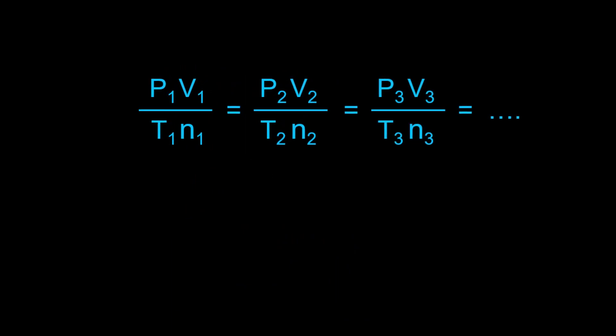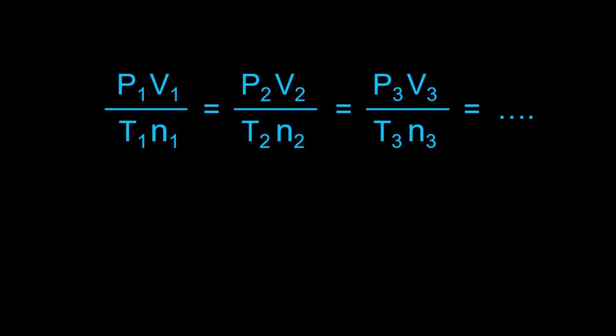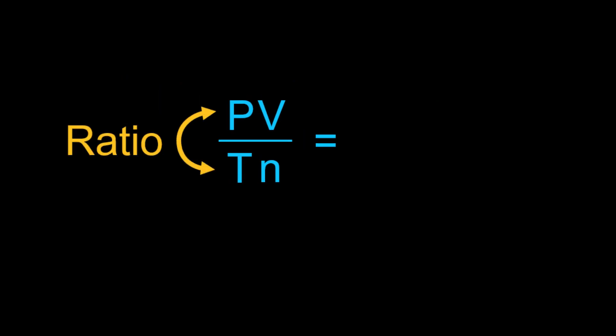We could keep going with changing conditions, and what this really tells us is that in any particular condition of pressure, volume, temperature, and number of particles, the ratio of PV to TN will always be constant for an ideal gas.